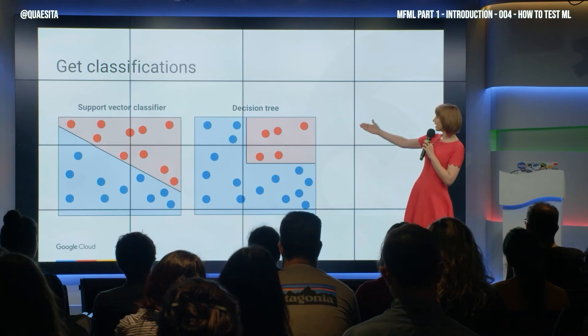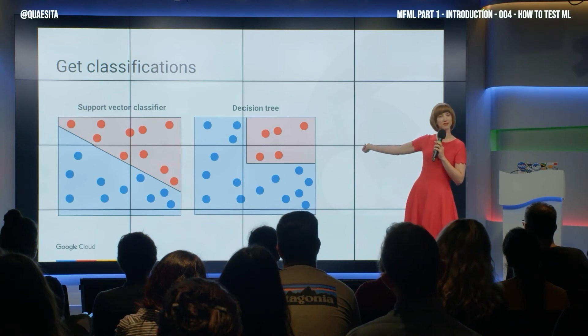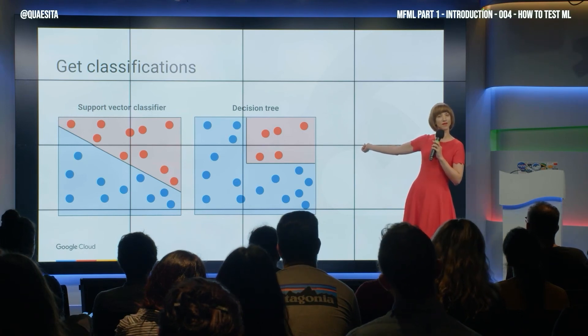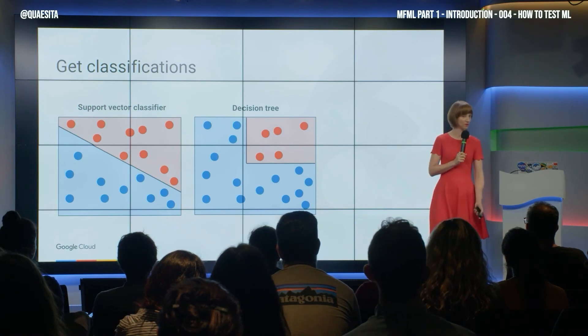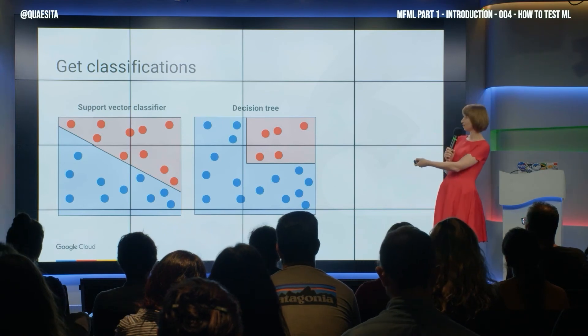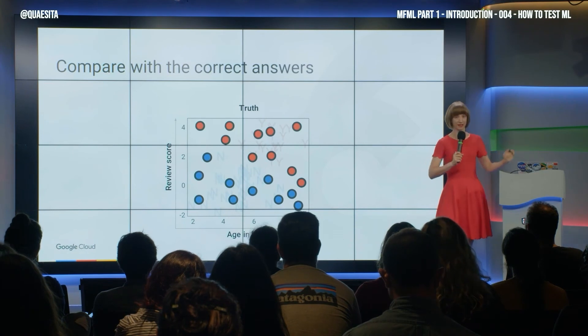So both of them had 100% performance scores. But now look at these results because they're different — one of them will probably be worse than the other. So let's find out who. How? Well, let's drink some wine for science.